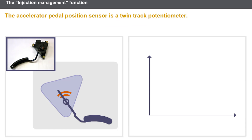The double tooth signal tells the computer the position of the crankshaft in relation to the cylinder top dead center. The accelerator pedal position sensor informs the computer of the driver's request. This sensor is a twin track potentiometer whose two voltage signals cross over each other as they rise and fall, ensuring the information is consistent.